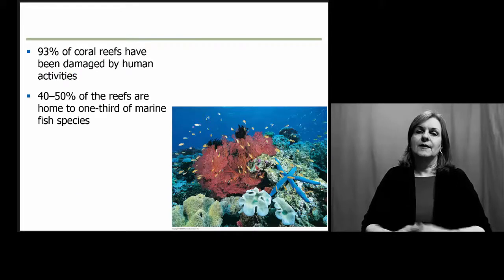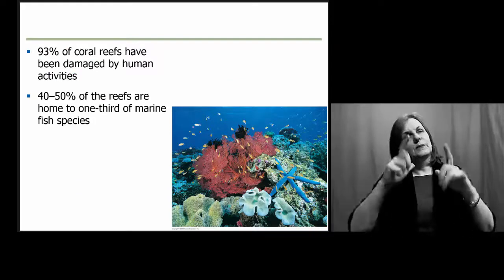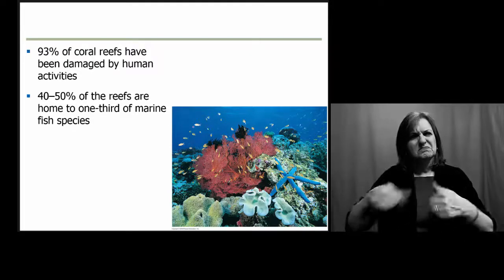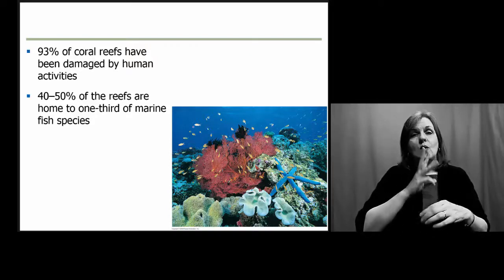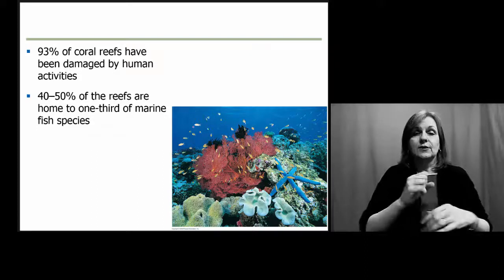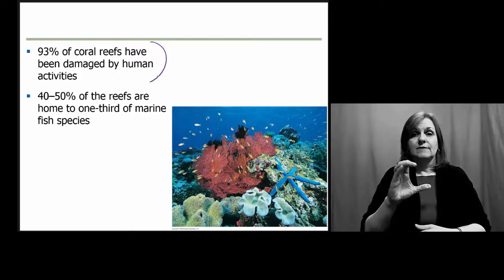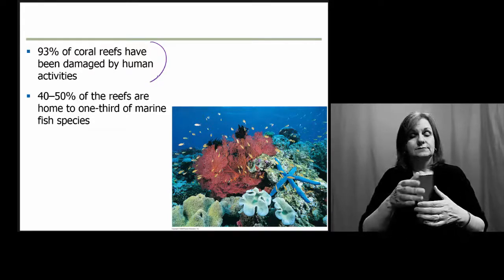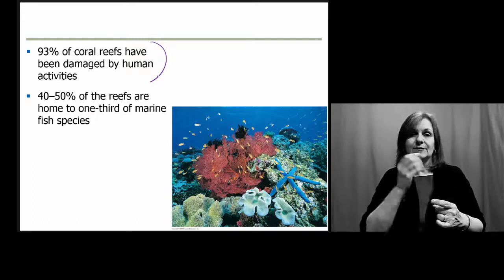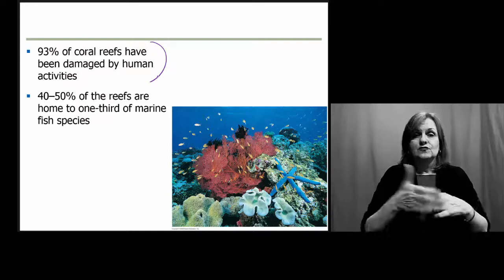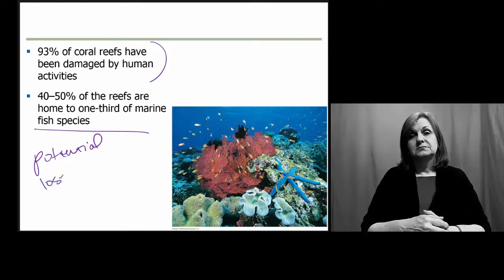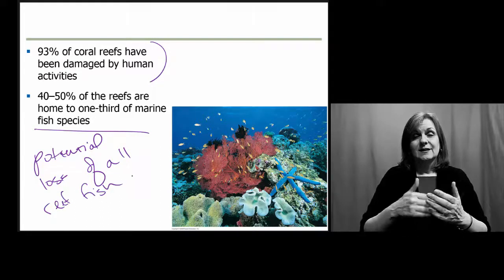When we talk about conservation efforts, we often go to those big charismatic macrofauna — large elephants, large leopards, animals on land. But we also have to keep in mind we're losing a huge amount of aquatic diversity, particularly in the oceans. About 93% of coral reefs have been damaged by humans in recent years. And if 40 to 50% of reefs are home to one-third of marine fish species, we're looking at the potential loss of all of those in the next 30 to 40 years.